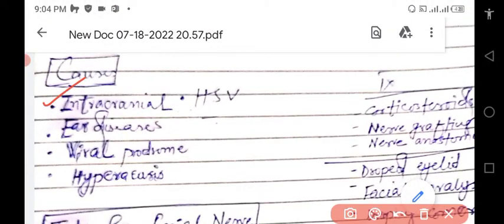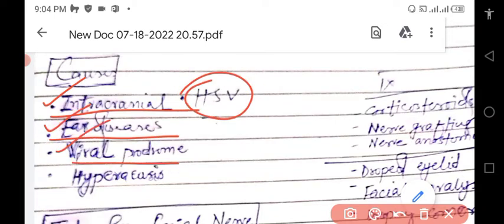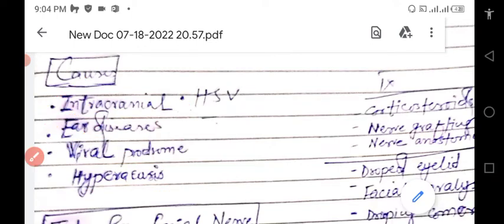There are multiple causes of facial nerve palsy including intracranial causes, HSV, ear disease, viral prodrome, and hyperacusis, which means the middle ear is involved.